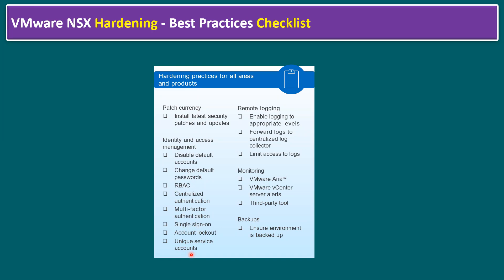Maintain unique service accounts — specifically for NSX, maintain an NSX-related service account, which can also be used for NSX backup and restore. For remote logging: enable logging to appropriate levels and forward logs to a centralized log collector. This can be VMware Aria Log Insight or any external third-party log management server such as SolarWinds syslog server. Also limit access to the logs.